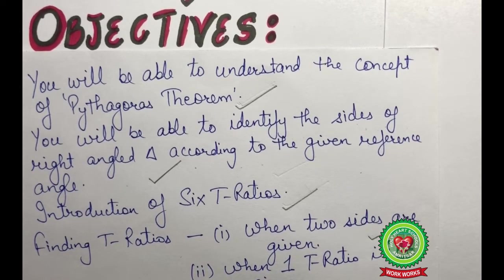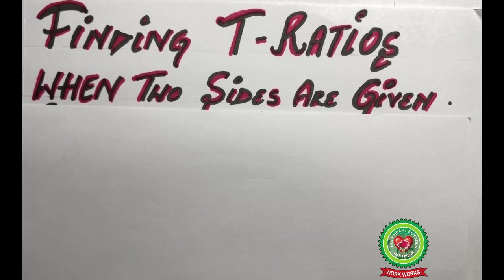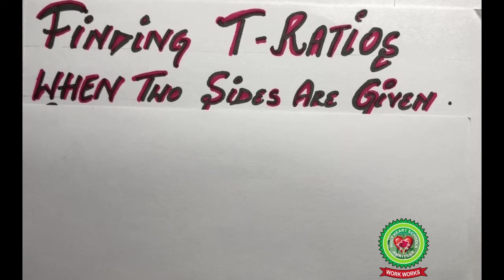Students, let us discuss some examples based on this topic. For finding the trig ratios we need all three sides of a right angle triangle. Since we will be given two sides, our first step will be to find the third side of the right angle triangle by applying Pythagoras theorem.